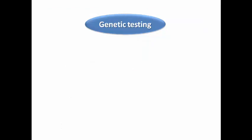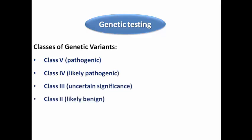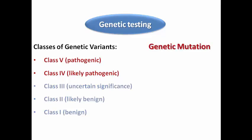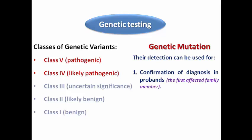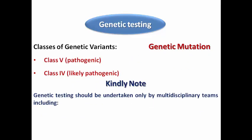Genetic testing is often misunderstood. The American College of Medical Genetics classifies genetic variants as: class V pathogenic, class IV likely pathogenic, class III uncertain significance, class II likely benign, and class I benign. We focus on class IV and V variants that may be responsible for channelopathies or cardiomyopathies. Detection can confirm diagnosis in the proband (first affected family member), guide initial diagnosis of relatives of sudden cardiac death victims or survivors, and help guide therapy or prognosis.